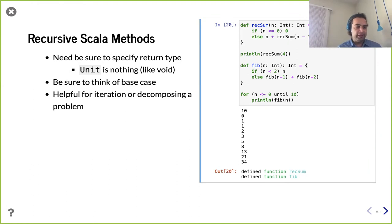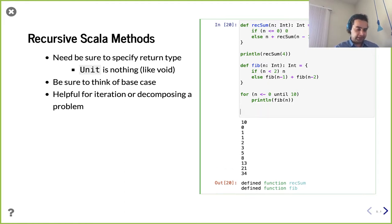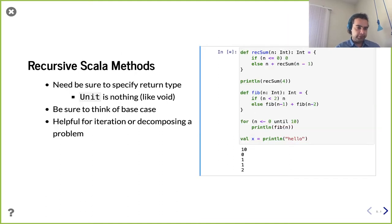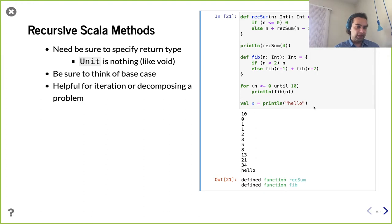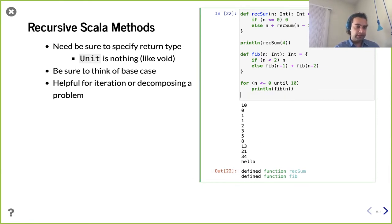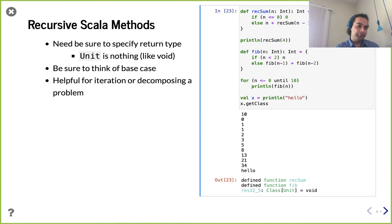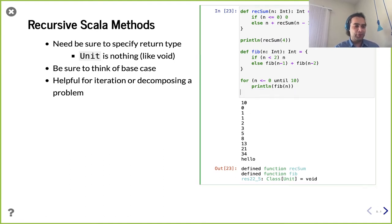If you ever need to have an empty return type but you're required to have one, 'unit' is the word you're looking for. We've seen unit before — for example, if I say val x equals println of hello, this should also be unit. It's going to print that out, and then x is going to be a unit — like void.